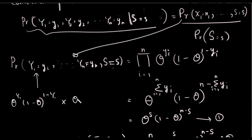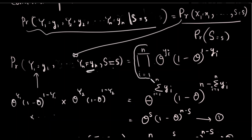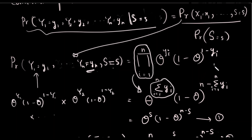We can write the product as a multiplication: theta to the y1, theta to the y2, and so on. We can simplify this using summation notation — the summation of yi — which gives theta to the power of the summation of yi.